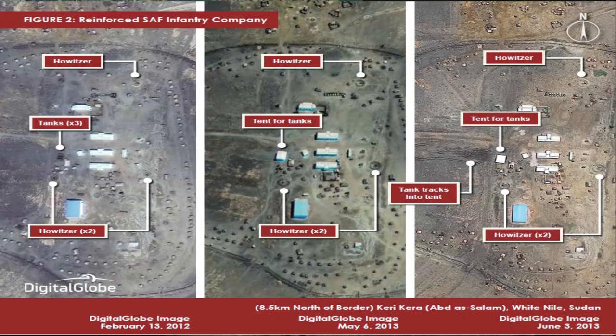Another example is the Satellite Sentinel Project, which George Clooney has been very active in. In this case, they're using imagery from a commercial source called Digital Globe. It's constantly monitoring certain areas of Africa — in this case Sudan and South Sudan — looking at troops within the demilitarized zone.